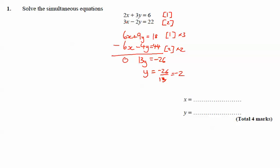So I now go back to the first equation where I know that 2x plus 3y equals 6. Substituting in y equals minus 2, I've got 2x plus minus 6 equals 6.